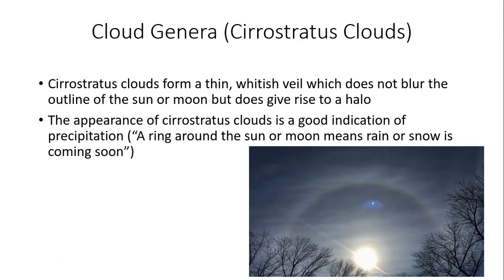Cirrostratus clouds form a thin whitish veil which does not blur the outline of the sun or moon, but gives rise to an atmospheric halo. The appearance of cirrostratus clouds is a good indication of precipitation — and here's the famous weather proverb: 'A ring around the sun or moon means rain or snow is coming soon.' The refraction of light off the ice crystals from the sun or moon results in these large halos. When cirrus clouds lower to cirrostratus, there's a good chance precipitation will occur within the next 12 to 24 hours. The halo is one of those indicators that precipitation may be on the way.